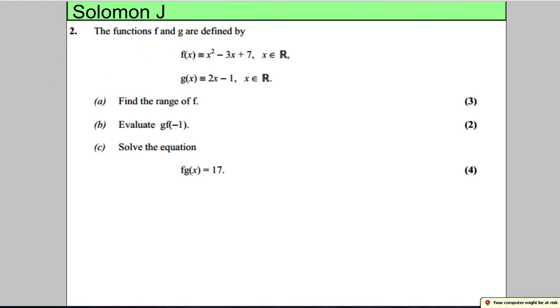This question we're given two functions, f and function g. Function f here is a quadratic and function g is a straight line. Just quickly before we go on, let's think about this. It tells us the domain of the quadratic is x can be any number, so we've got the whole quadratic. And it tells us for the straight line that x can also be any number, so we've got the whole of the straight line.